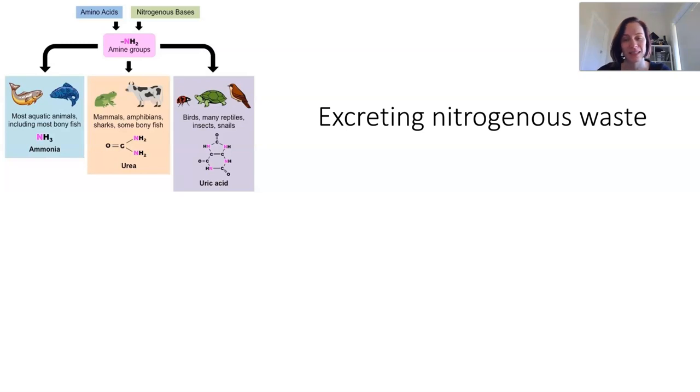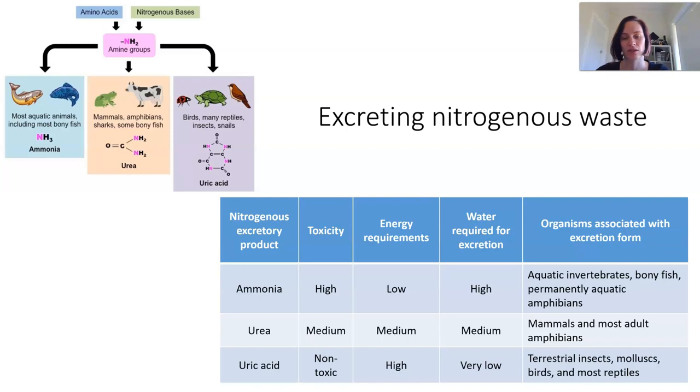Excess amino acids are broken down in the liver by deamination, and the nitrogenous waste product of deamination is ammonia. This ammonia is highly toxic, so immediately it has to be converted into something less toxic and we convert it into urea. Urea is the main nitrogenous waste product in humans. It's carried from the liver to the kidneys in the bloodstream where it's filtered out and excreted as urine.